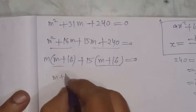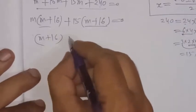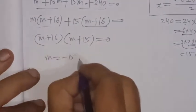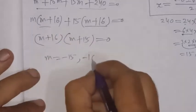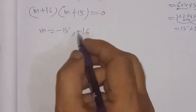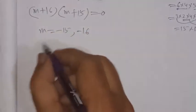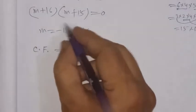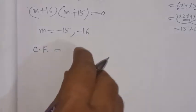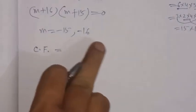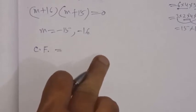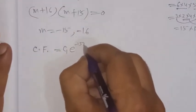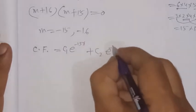Taking out the common factor: (m + 16) is one factor and (m + 15) is another. Setting m + 15 = 0 gives m = −15, and setting m + 16 = 0 gives m = −16. So m has two values: −15 and −16. The complementary function (CF) can be written as: CF = c1·e^(−15x) + c2·e^(−16x).